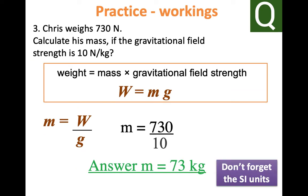And the final question, we are trying to calculate the mass and we rearrange the equation so that we have 730 newtons divided by 10 for our gravitational field strength, and the answer is 73 kilos.